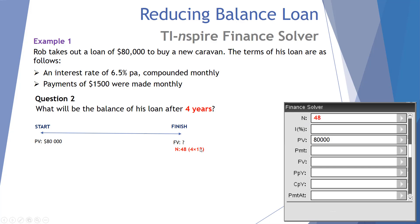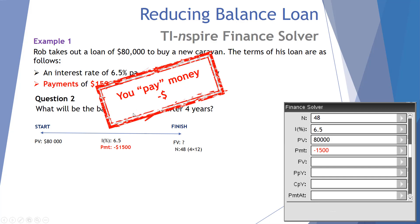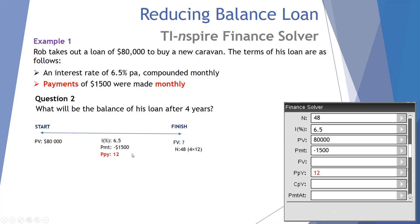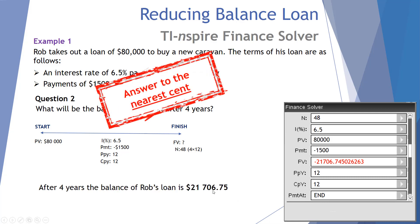Because compounding and payments are both monthly, N must be entered in months. Four years times 12 months gives us 48 months. The interest rate remains 6.5% per annum, and the payment is negative $1,500 because Rob is paying money to the bank. Payments per year is 12, compounding periods per year is 12, and payment at end is selected. The future value after four years will be $21,706.75, rounded to the nearest cent.